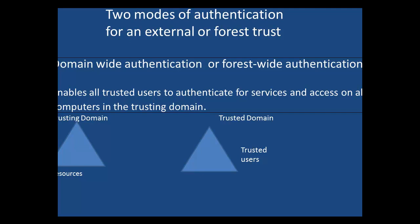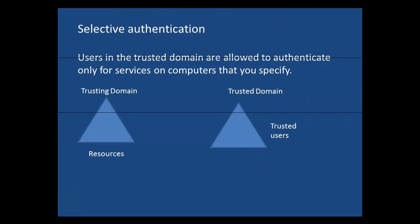Now let's look at the difference and compare it with the scenario where we have selective authentication. In selective authentication, the users in the trusted domain are allowed to authenticate only for services on computers that you specify. You might have a particular file server with certain folders and files that you want users in the trusted domain to access — giving permission only for those particular resources, so the user does not have access to everything. Hence the word selective authentication.